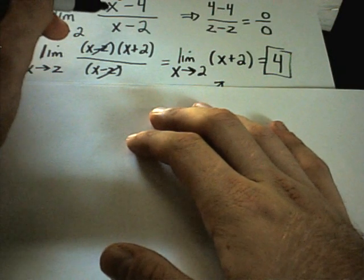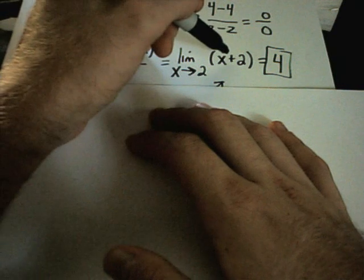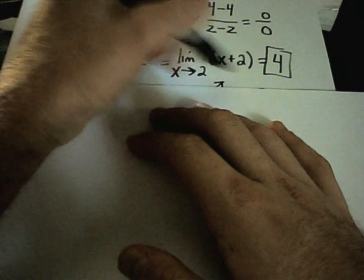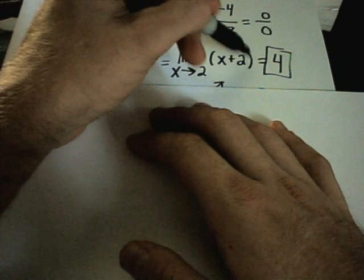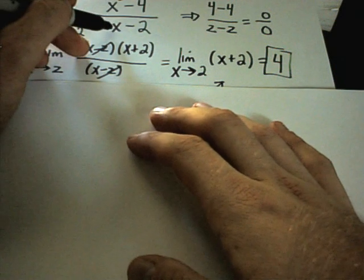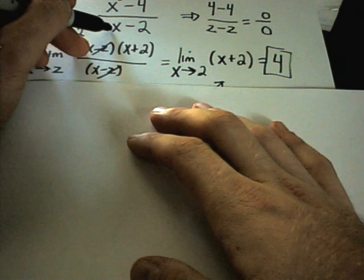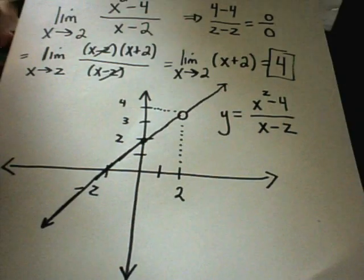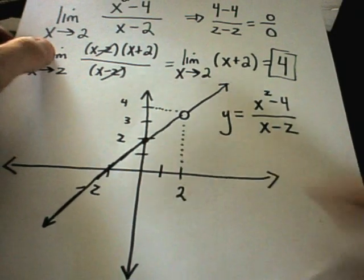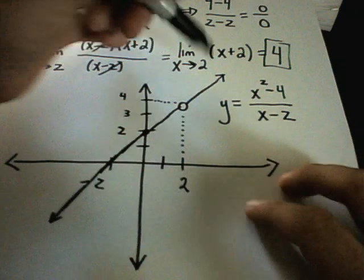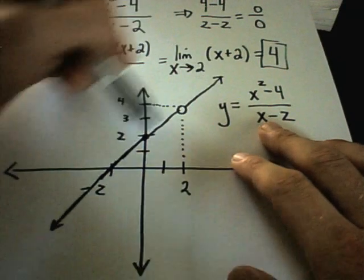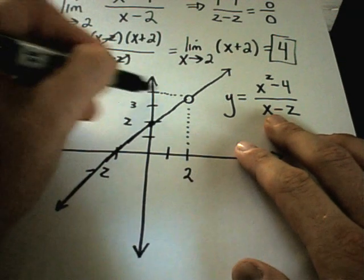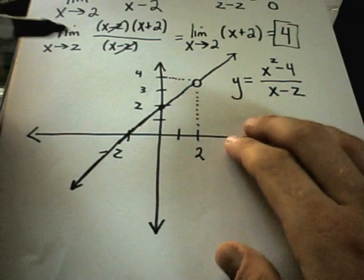And if you graph the function x squared minus 4 over x minus 2, it's going to look just like the graph of y equals x plus 2, which is a straight line, except for it's going to be undefined at the value of 2 because that gives me 0 in the denominator. So I made a little graph here. Here is the graph of y equals x squared minus 4 over x minus 2. Notice at 2, it's undefined.